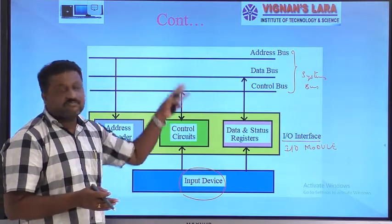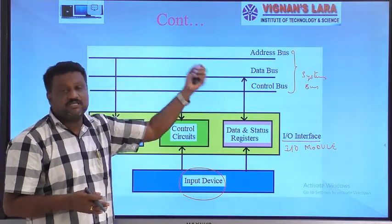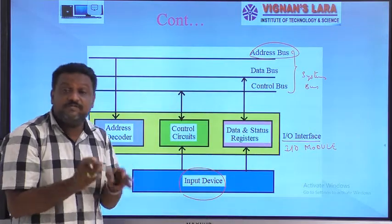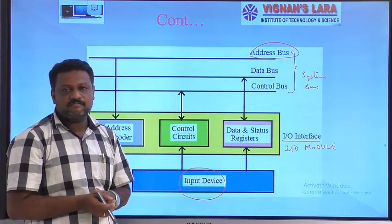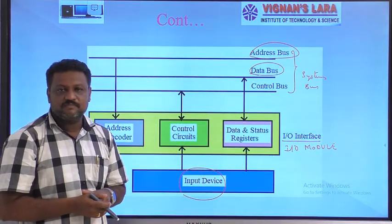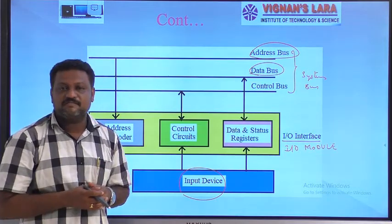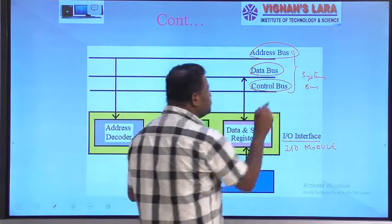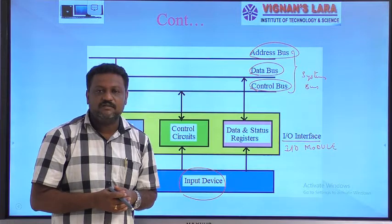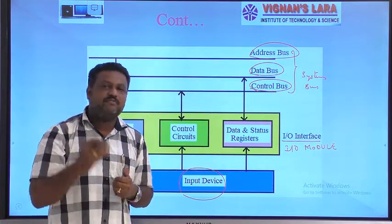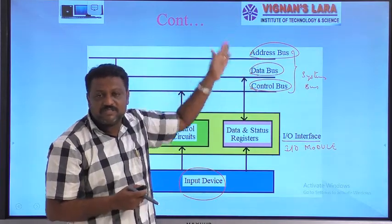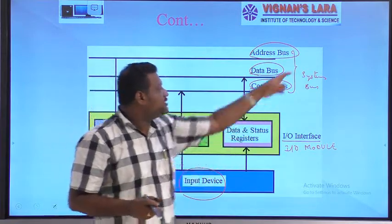The system bus consists of three different buses: the address bus, the data bus, and the control bus. The address bus carries addresses of I/O devices or memory locations. The data bus carries data information as well as instruction codes between the CPU, memory, and I/O devices. The control bus carries control signals, request signals, grant signals, and acknowledgement signals between the processor, I/O devices, and memory.